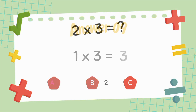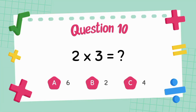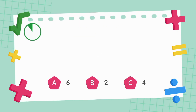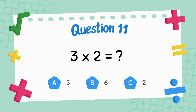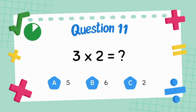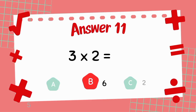What is two multiply three? The answer is six. What is three multiply two? The answer is six.